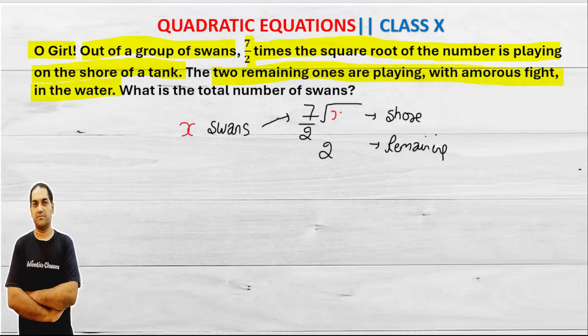Simple thing is, total number of swans will be the addition of both. Clearly in this question, according to the question if the total number of swans is this, then this total number of swans is divided into these two things.